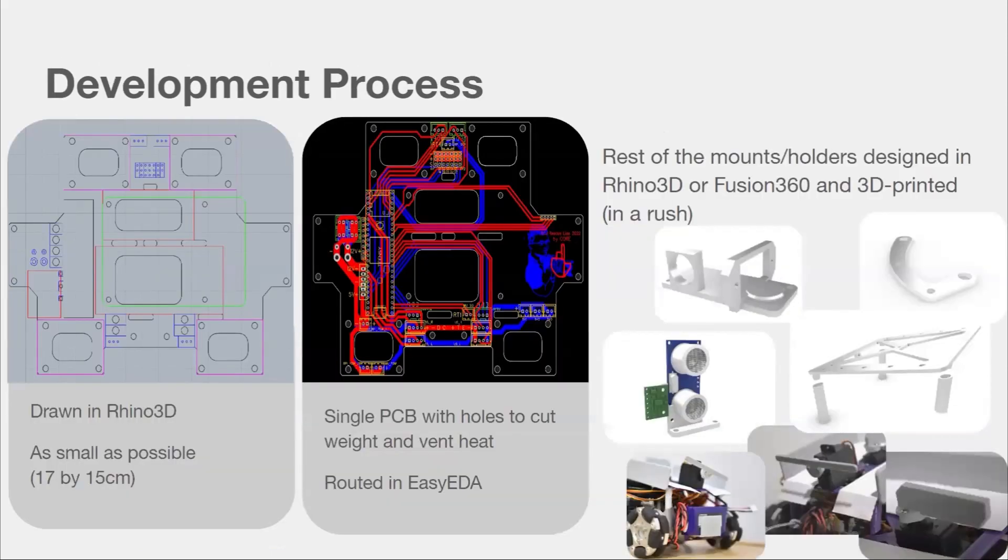So after selecting our parts, we drew our layout in Rhino 3D and routed the traces in EZDA. As you can see, everything is placed on a single PCB with holes to cut weight and vent heat. Then afterwards, we cut and printed the mounts for everything.